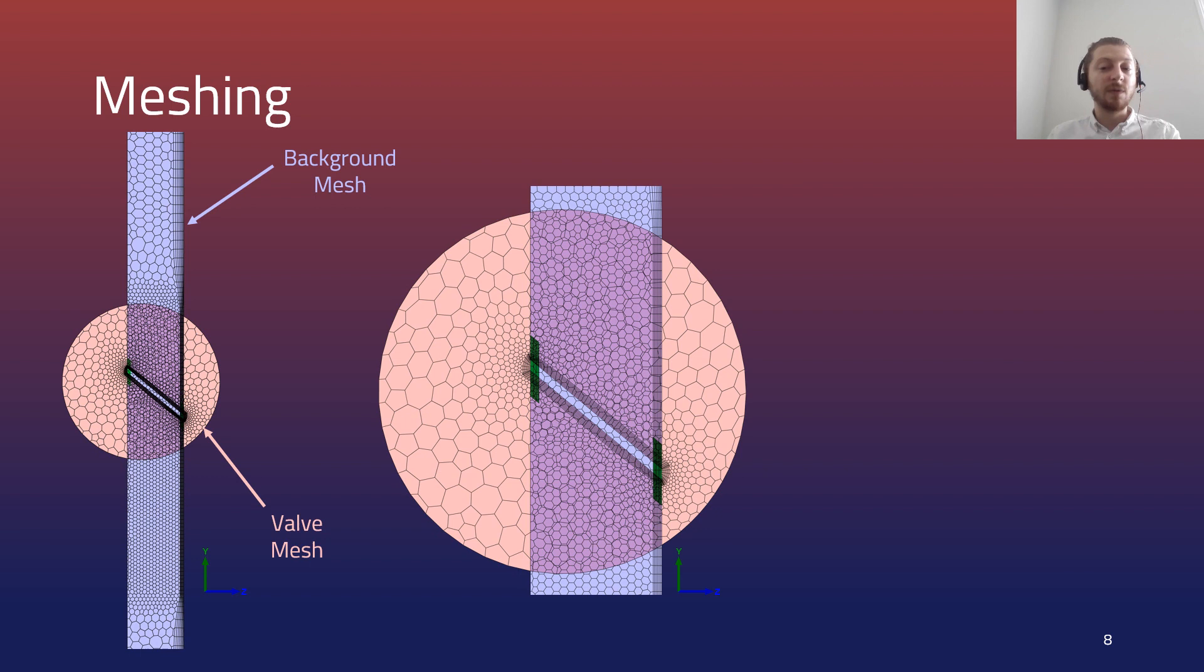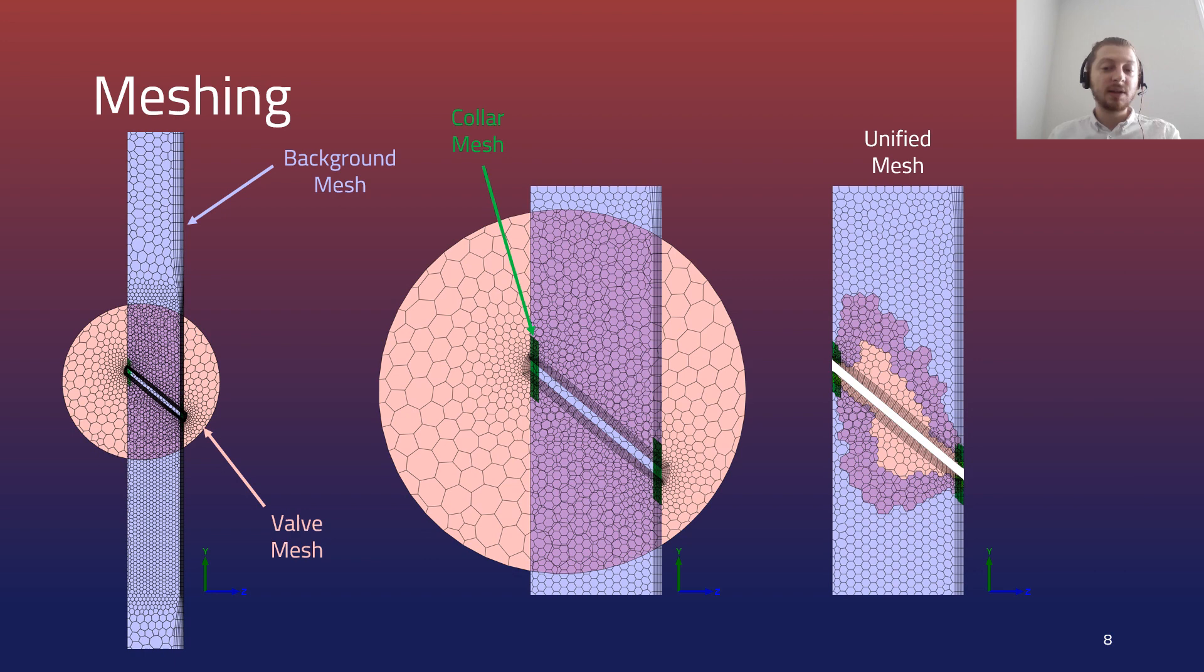Separate fluid mesh zones were generated for the background fluid cylinder and for the valve fluid region as well as a column mesh zone that aimed to improve near wall modeling. These mesh zones were combined and the unified mesh could be solved.